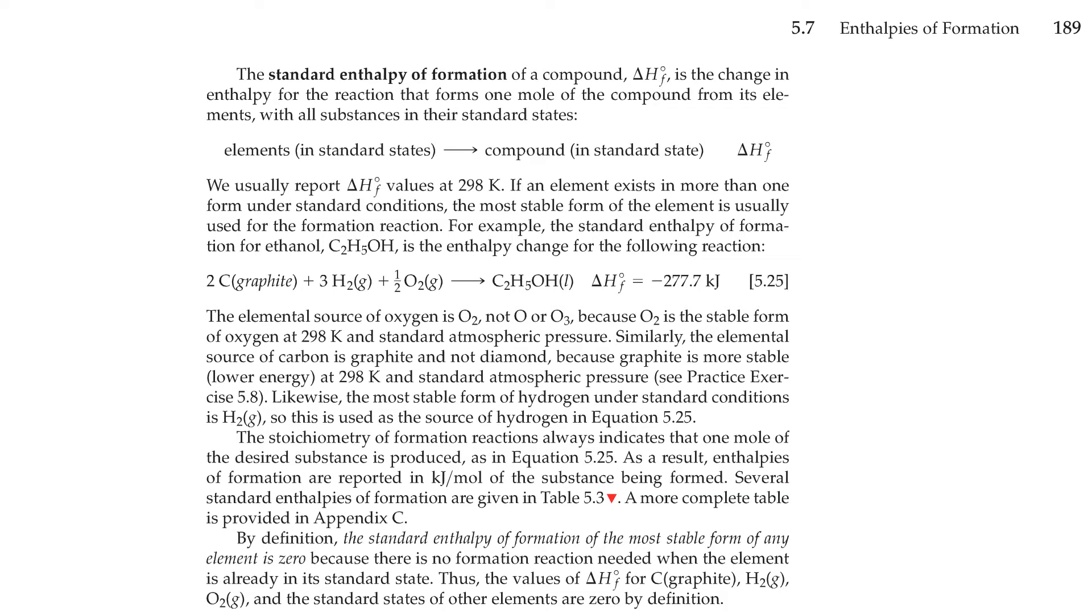If an element exists in more than one form under standard conditions, the most stable form of the element is usually used for the formation reaction. For example, the standard enthalpy formation for ethanol is an enthalpy change of the following reaction. Two carbon plus hydrogen plus half oxygen yields ethanol and delta H nought sub f of negative 277.7 kilojoules. The elemental source of oxygen is O2, not O, or O3, because O2 is the stable form of oxygen at 298 Kelvin and standard atmospheric pressure.